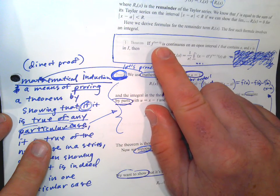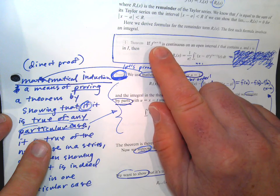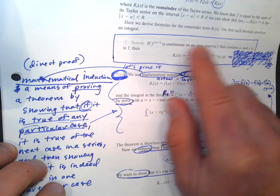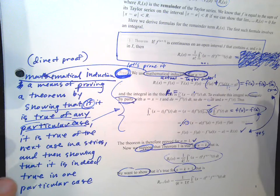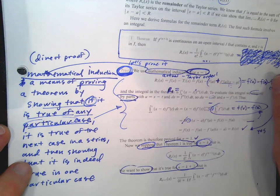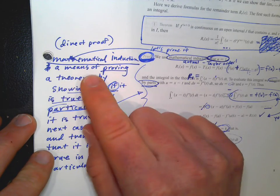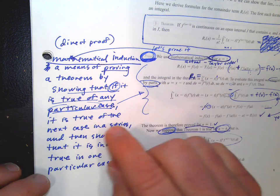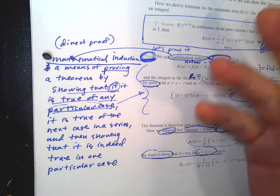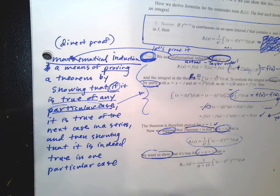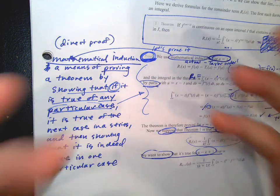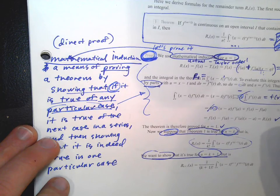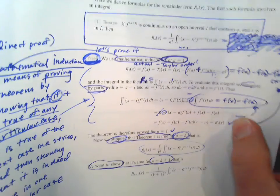If f to the n plus 1 is continuous — the next derivative is continuous and exists on an open interval I that contains a, and x is in I — then this is the remainder of all the other terms. We're going to use mathematical induction. Mathematical induction is a means of proving a theorem by showing that if it is true for any particular case, it is true for the next case in the series. We prove it for a special case, accept that it works for the next one, prove that it works, and therefore it must work for all cases. This is a type of direct proof.